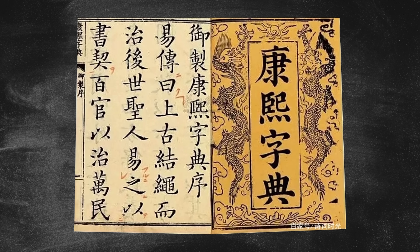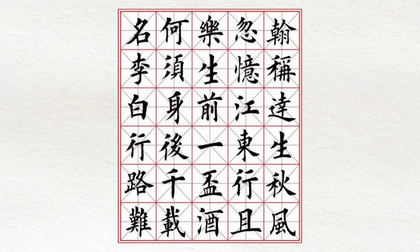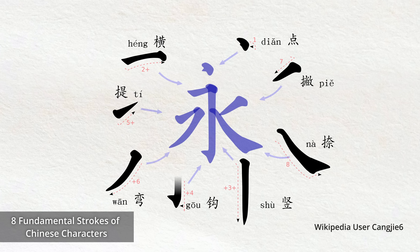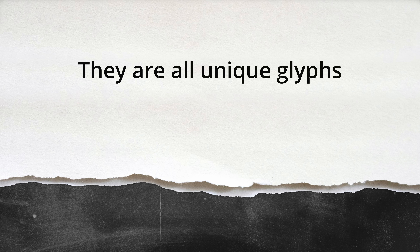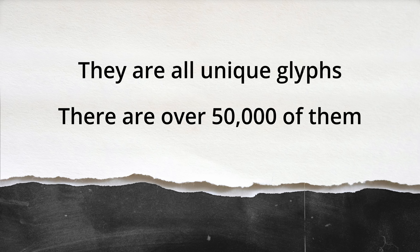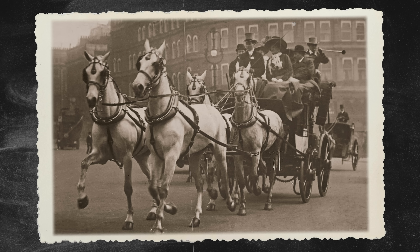This is a Chinese dictionary. Unlike English, the Chinese language is made up of square-shaped logograms consisting of different strokes in different positions and different orientations. They are all unique glyphs and there are over 50,000 of them. Imagine it's the early 1900s and you're a young Chinese engineer trying to come up with a typewriter for the Chinese language. How would you go about doing it?